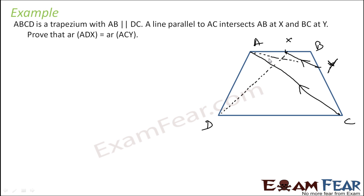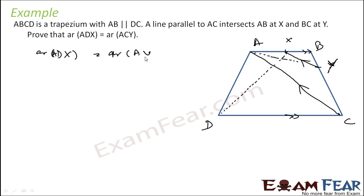We need to prove that the areas are the same. The only thing we know is that these two lines are parallel and these two other lines are parallel. Let's apply the theorem. Since these two lines are parallel and we have triangle ADX, the area of triangle ADX equals area of triangle AXC.